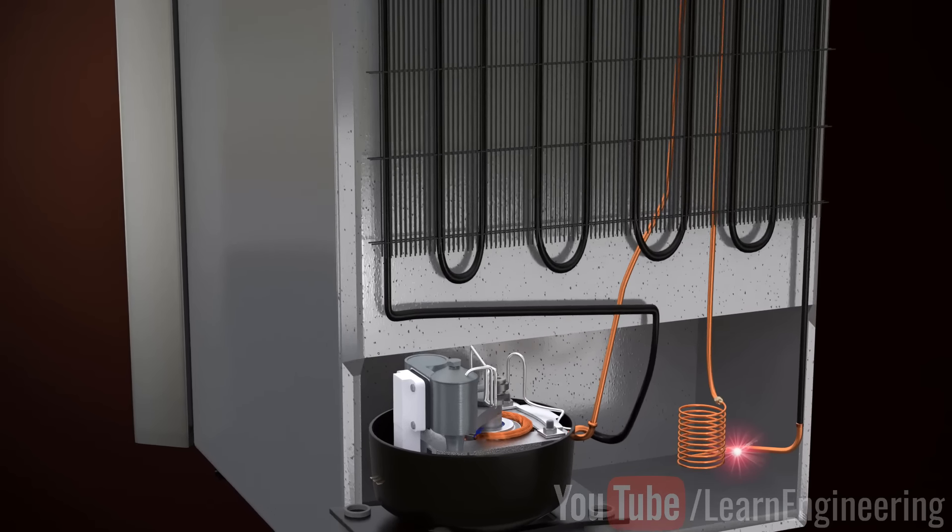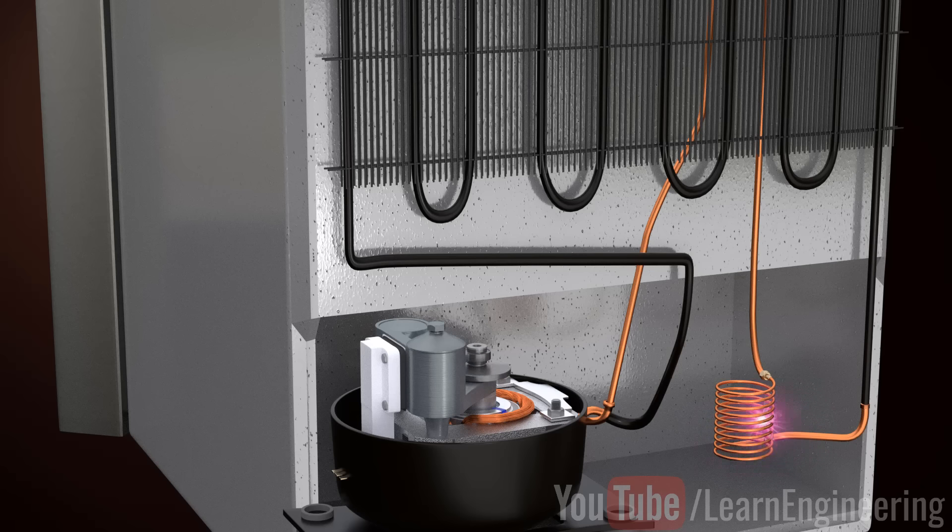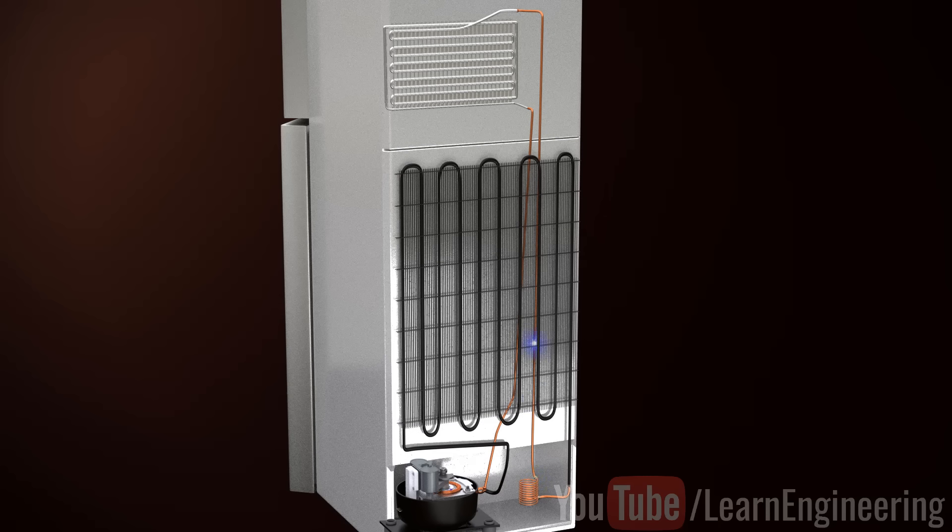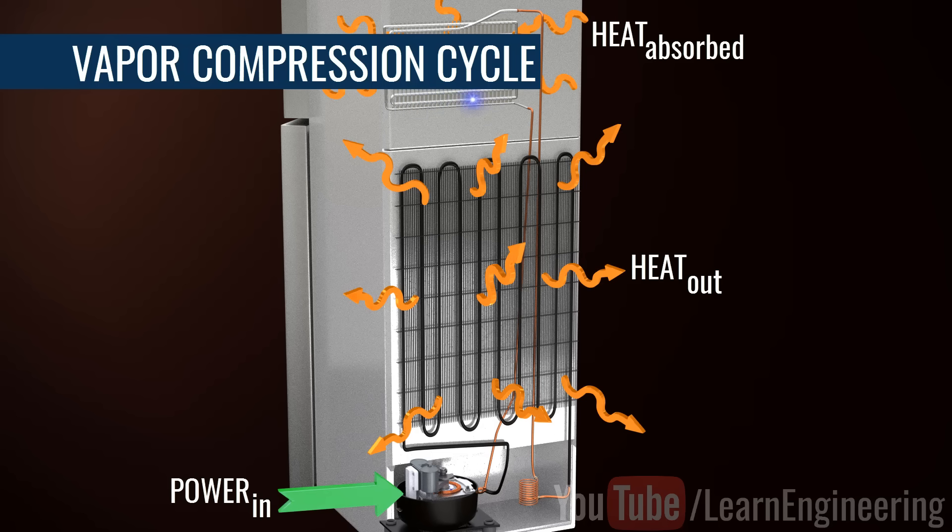Now, the refrigerant is back to its initial state, so it can be fed to the throttling device again. Just by repeating this cycle over and over, we will be able to achieve a continuous cooling effect. This cycle is more specifically called the vapor compression cycle.